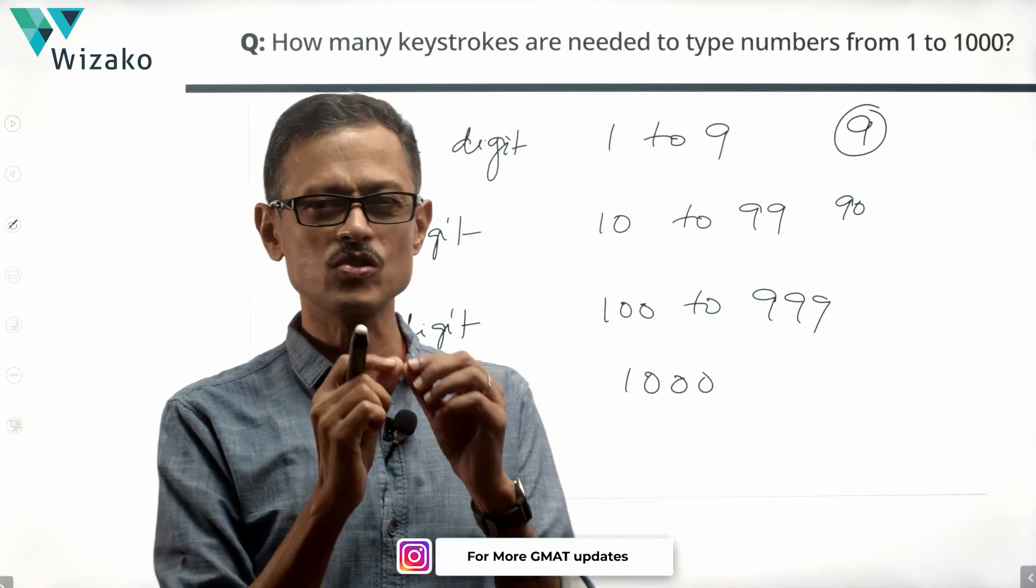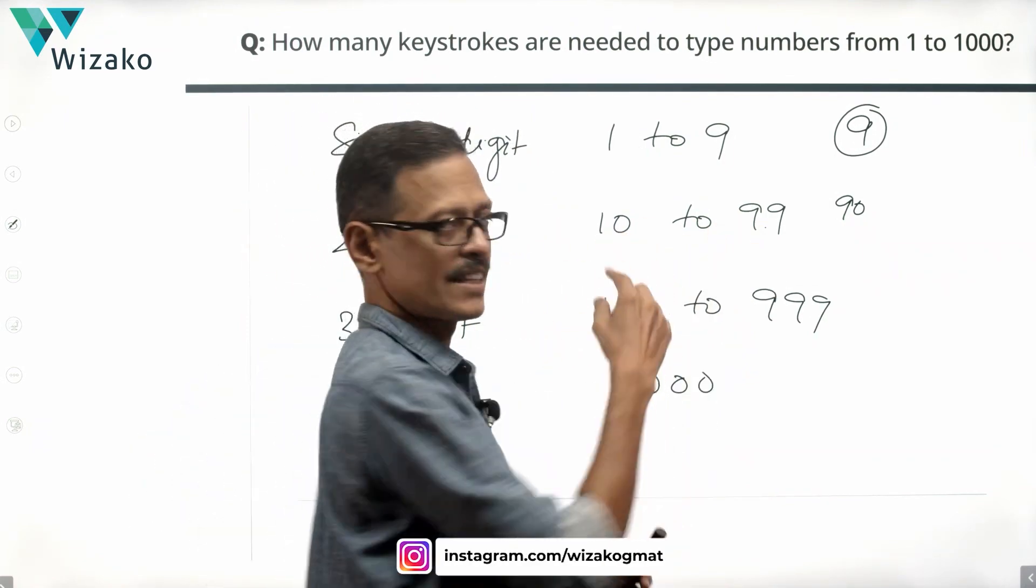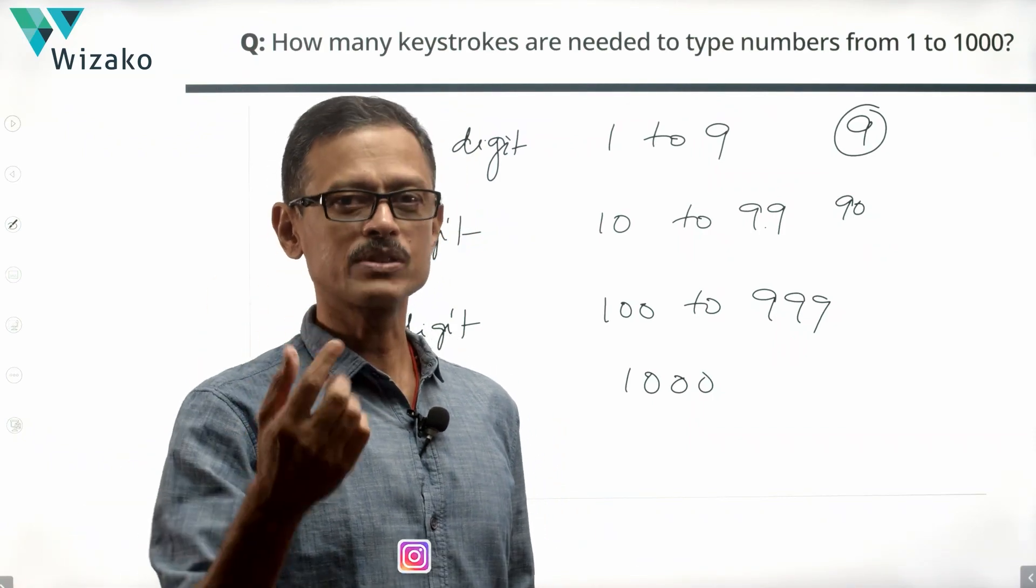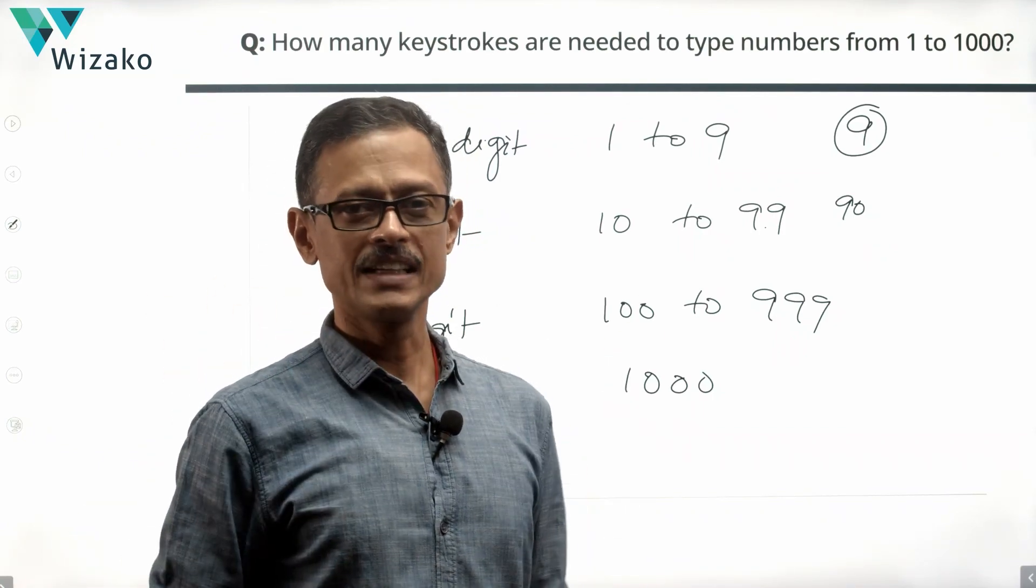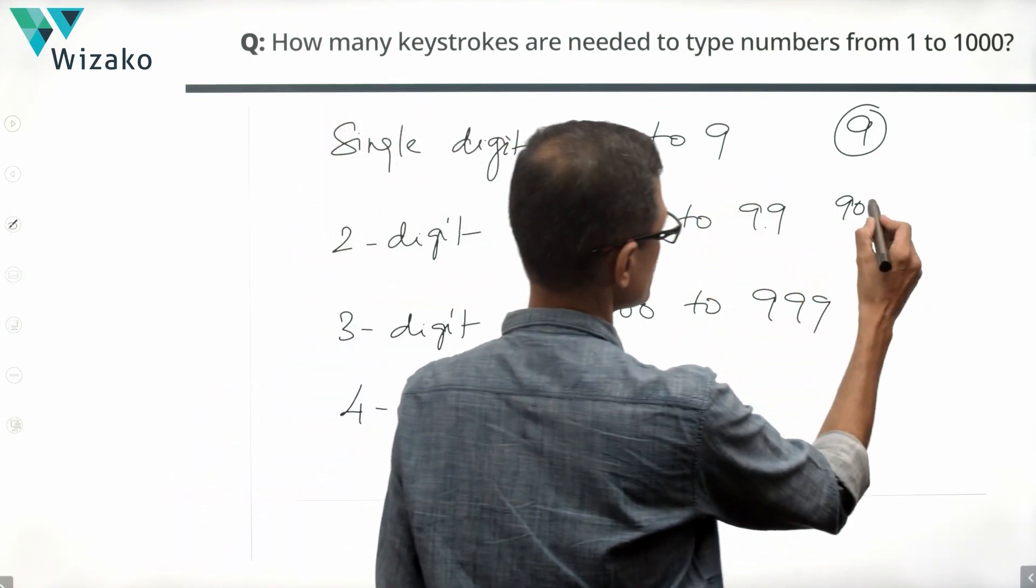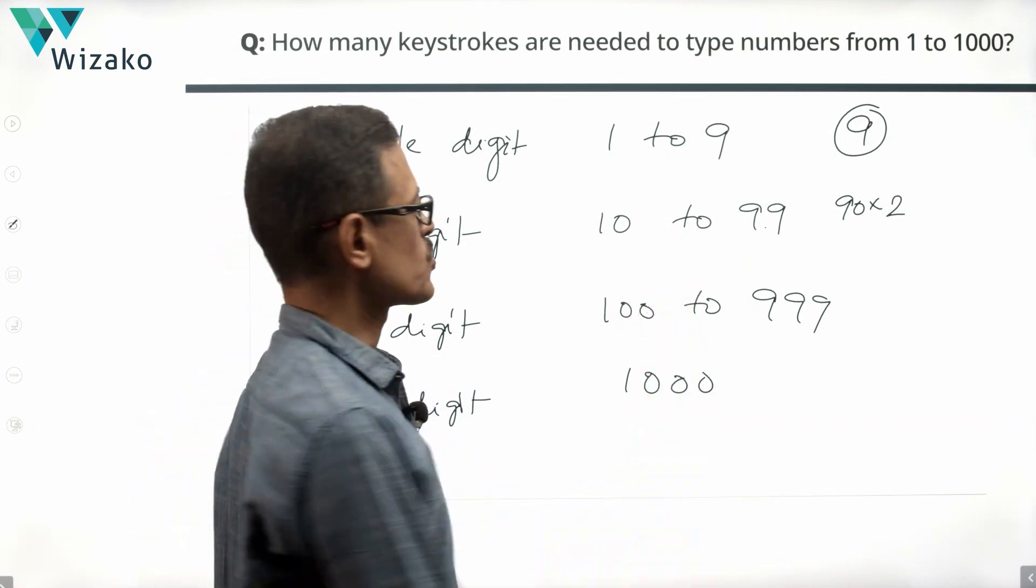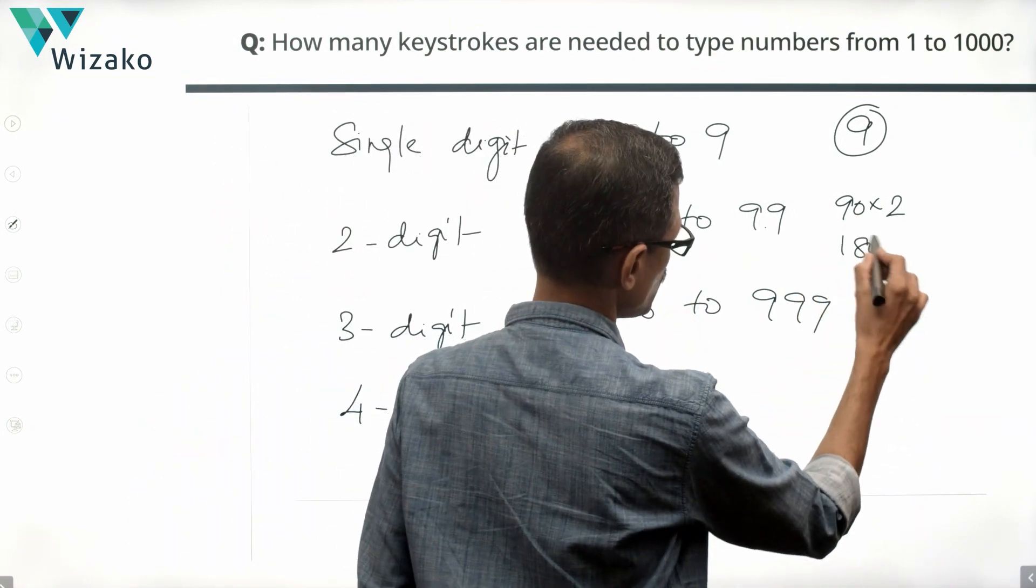It is not 89. Just watch out for it. 99 minus 10 is 89. So we're subtracting the 10. We should actually include the 10 also. Therefore that 89 plus 1 will make it 90. So one of the two ways we can reason this out. So 90 two digit numbers, each requiring 2 digits to type that number. So number of keystrokes required here will be equal to 180.